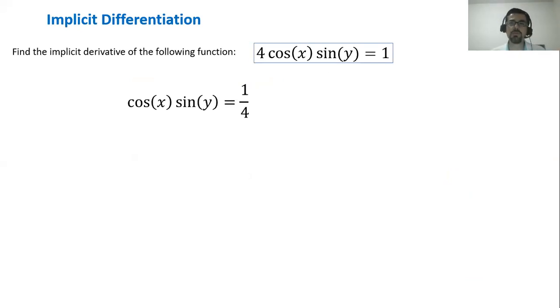The basic two steps to solve a derivative with implicit differentiation are step number one, differentiate both sides of the equation. Step number two, solve for y prime. So let's do it.